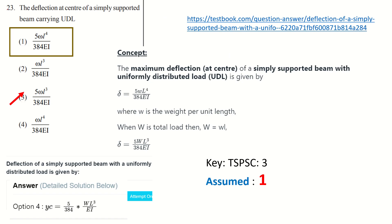The first one is Question 23 — the deflection at the center of a simply supported beam carrying a uniformly distributed load. This same question has been asked in previous civil exams. The major difference here is between small w and capital W. Capital W is the total load, where W equals small w into L, that is weight per unit length into span. The formula is 5WL³ divided by 384EI.